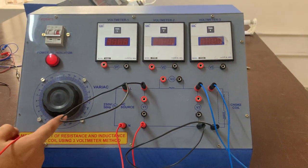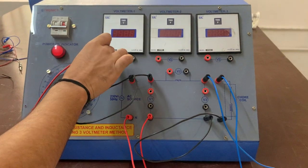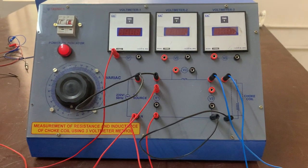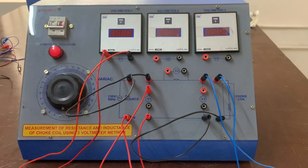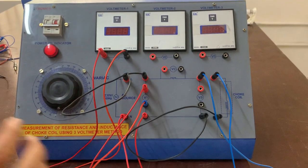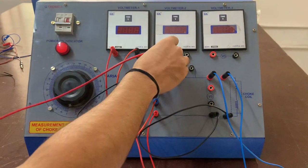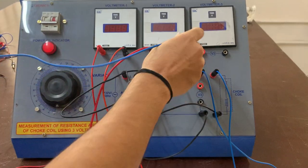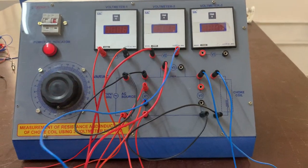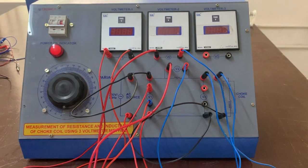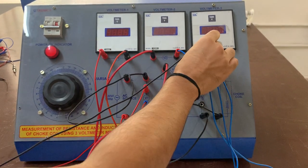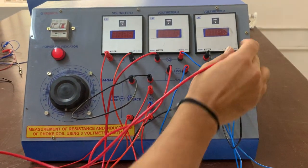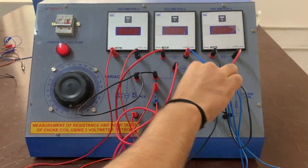The first voltmeter, which is connected across the AC source, we'll take V1 positive and connect it here, and V1 negative to this negative. Next, voltmeter 2 is connected across resistor RS, positive to positive and negative to negative. Finally, the last voltmeter is connected across the choke coil, positive to positive and negative to negative.